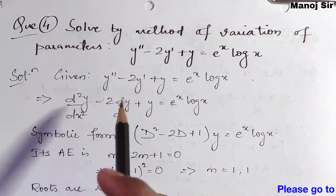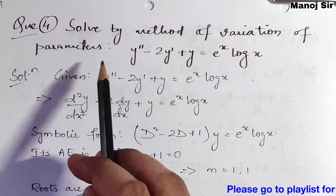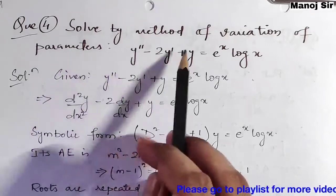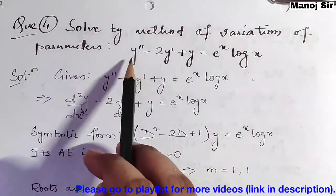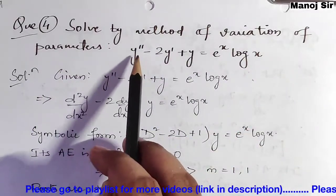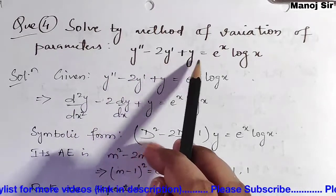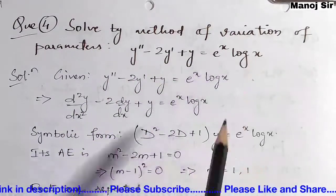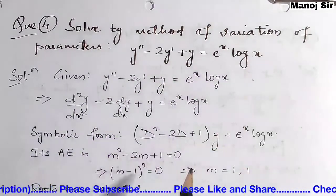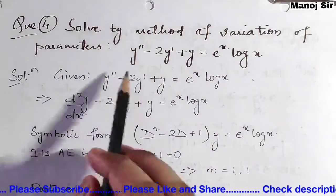The question says: solve by method of variation of parameters — y double dash minus 2y dash plus y equals e to the power x times log x.